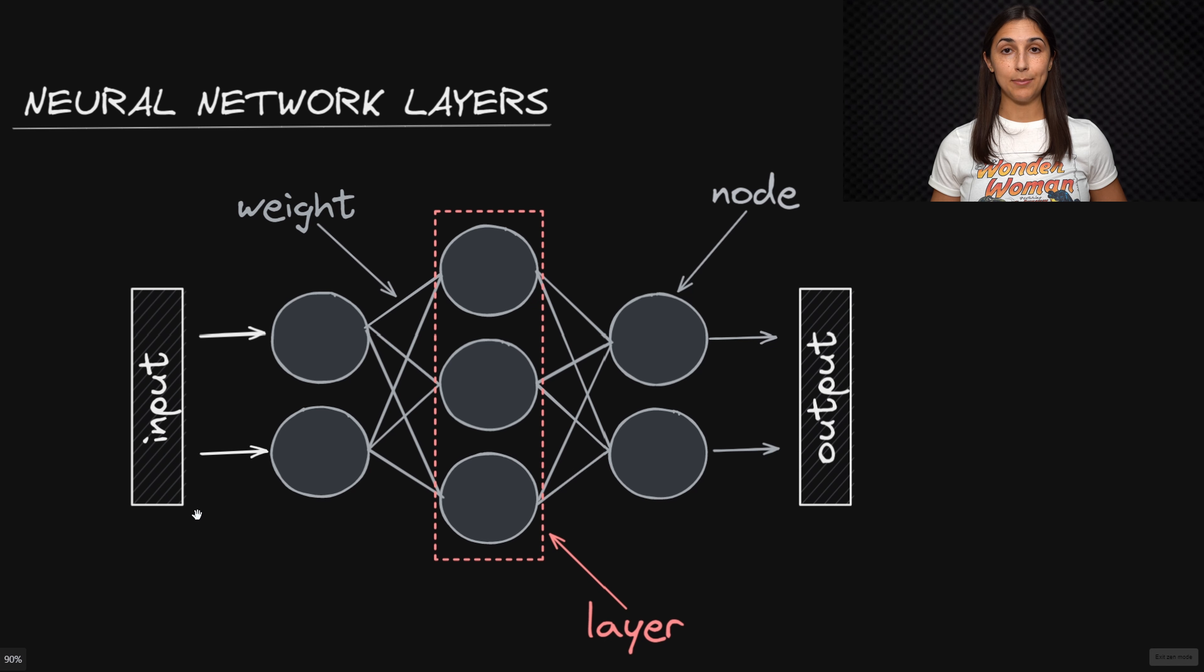that receives the input data and an output layer which supplies the predictions from the network on the given input, as well as one or more hidden layers that process the input data as it's passed forward through the network.